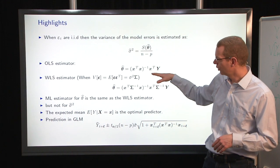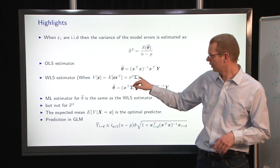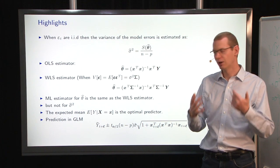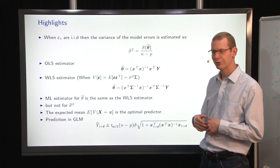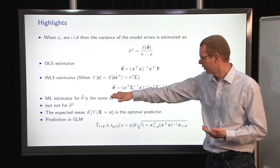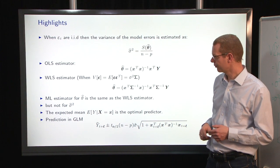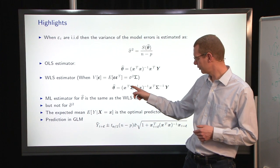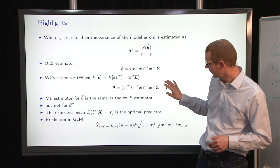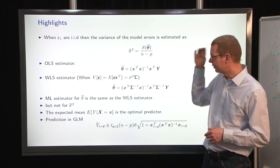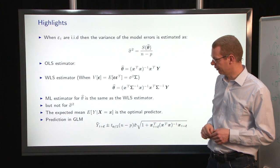You have the ordinary least squares estimator as x transpose x inverse x transpose y. We can also go to the weighted least squares where we have an assumption that we have a covariance matrix on top of just, that is different from just the identity. And then you have the sigma inverse placed in the similar equation, but two places. And if we follow the identity matrix, the ordinary least squares is a subcase of the weighted least squares estimator.